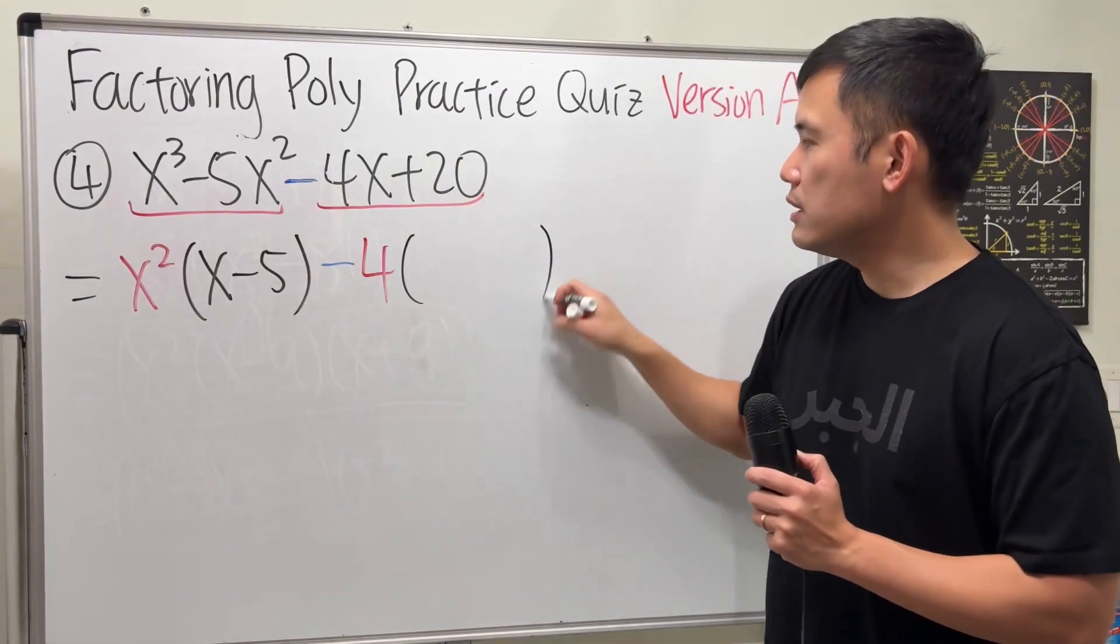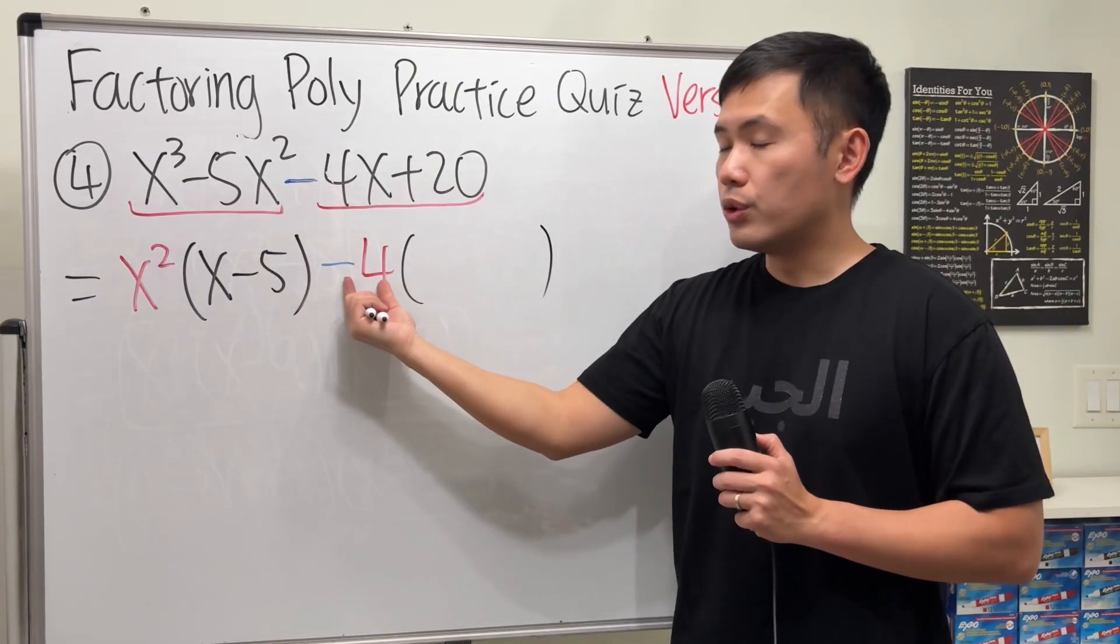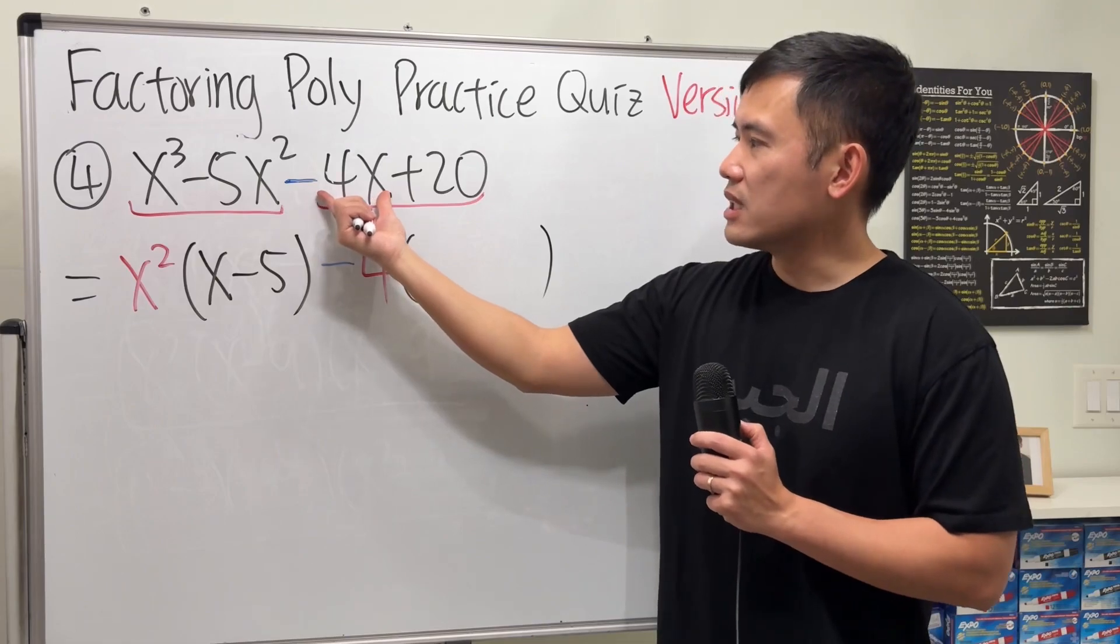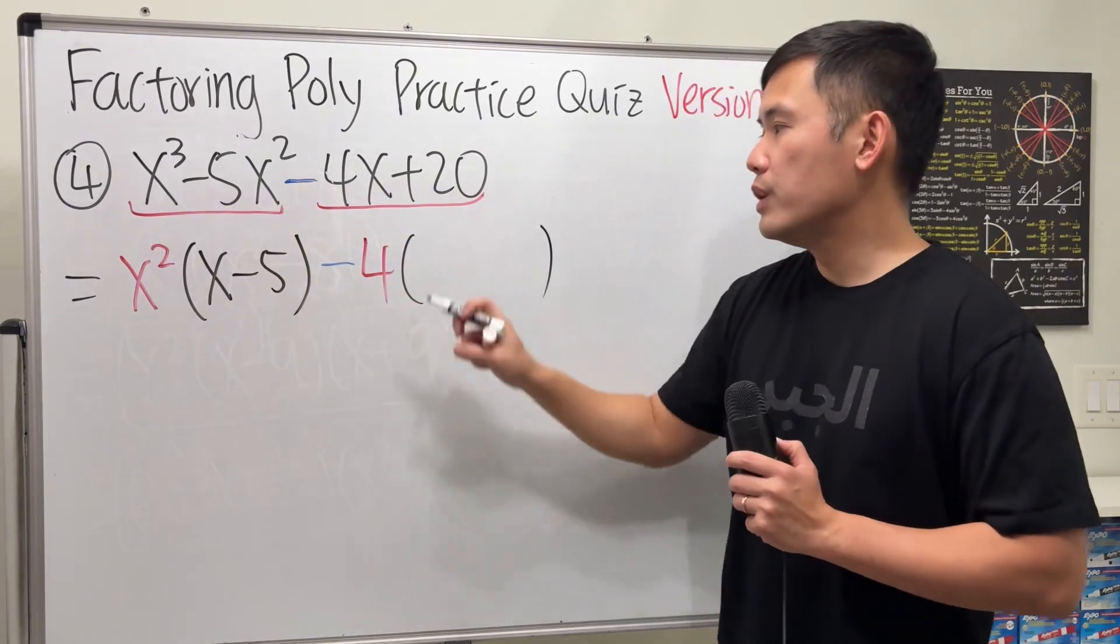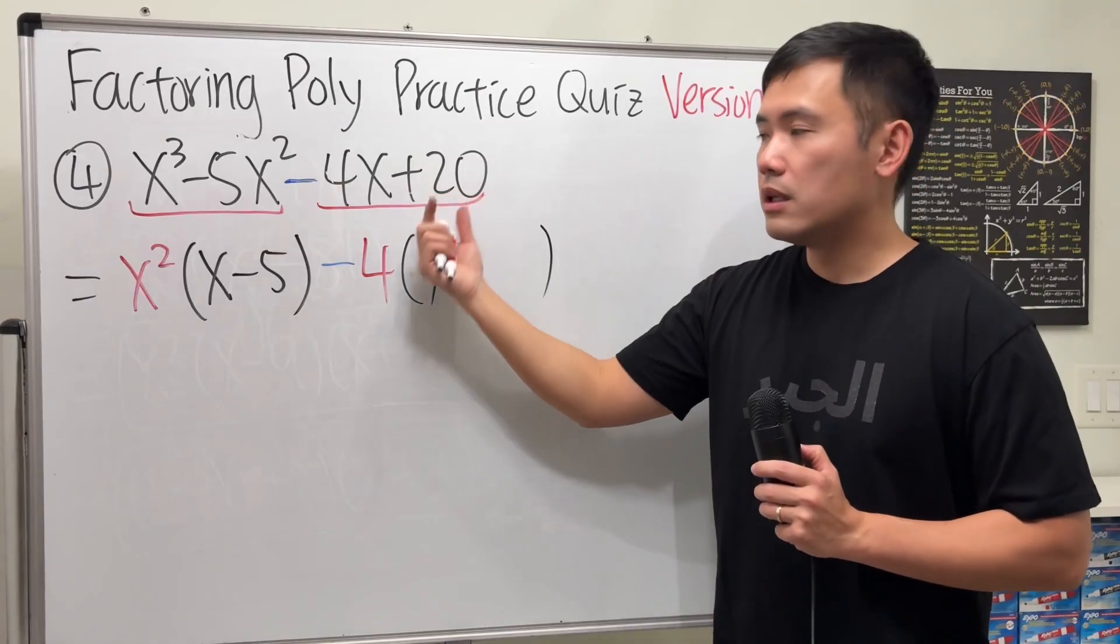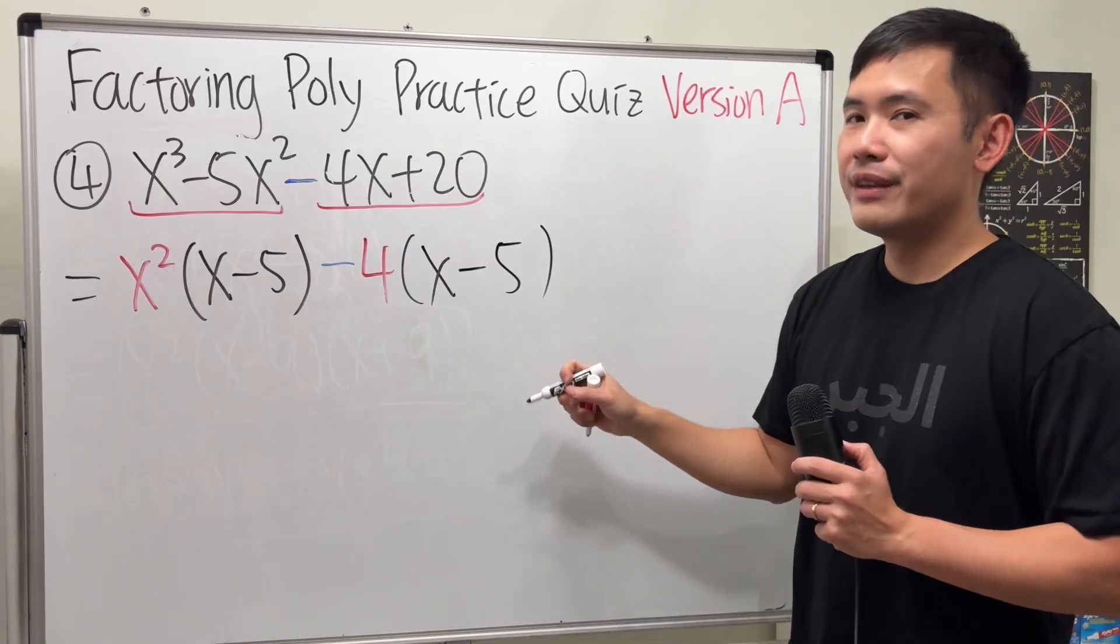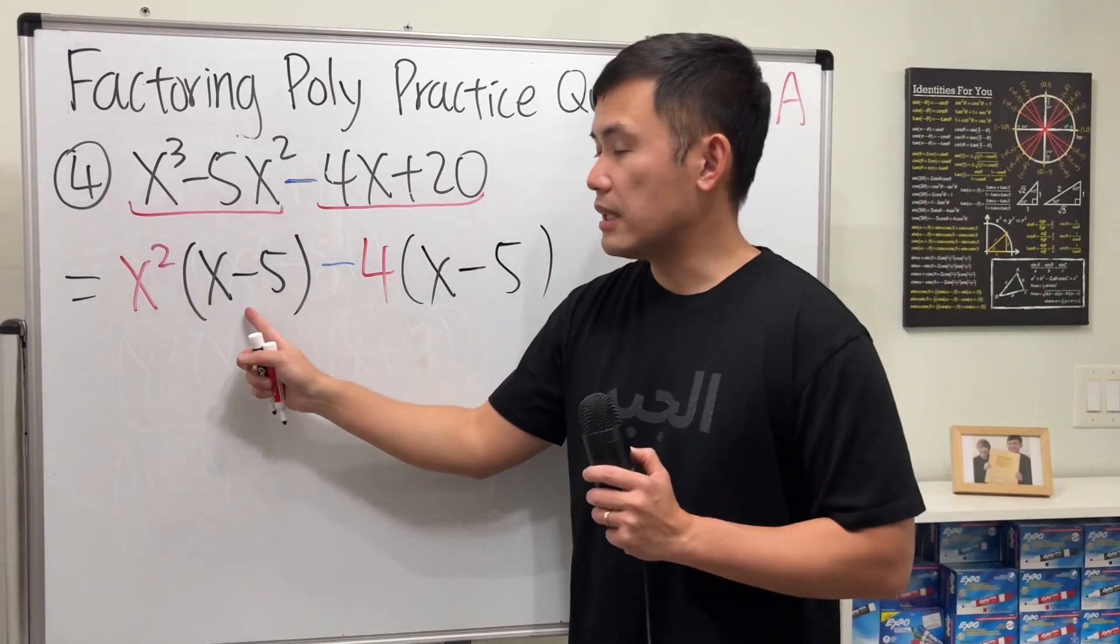Now we are going to put on parentheses. See, originally this term is negative 4x, we took out negative 4. Just like thinking about it as negative 4x divided by negative 4, we get x. Next, 20 divided by negative 4, we actually get negative 5. So this is indeed the same as that.